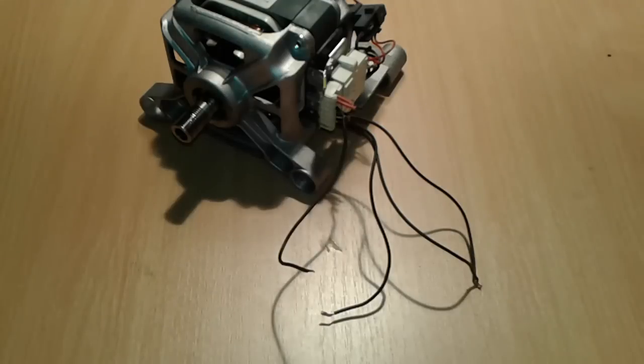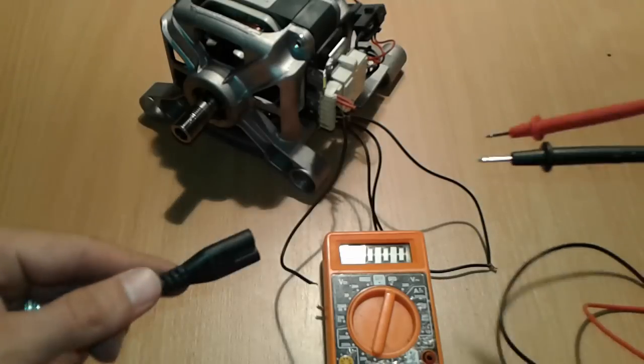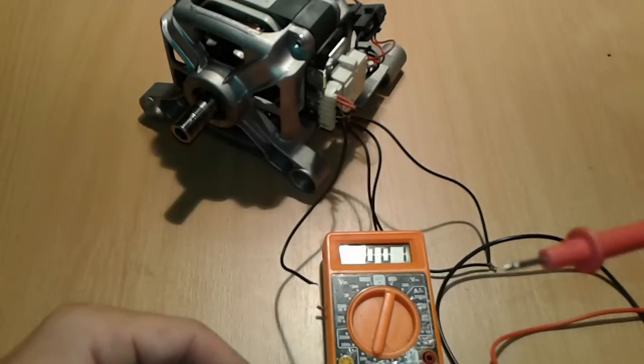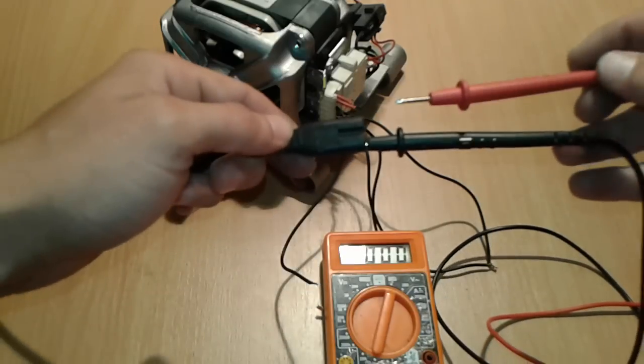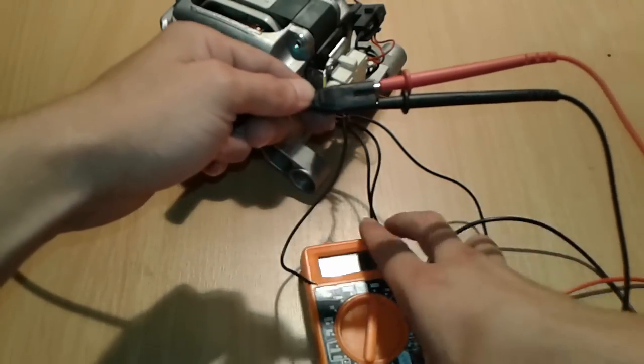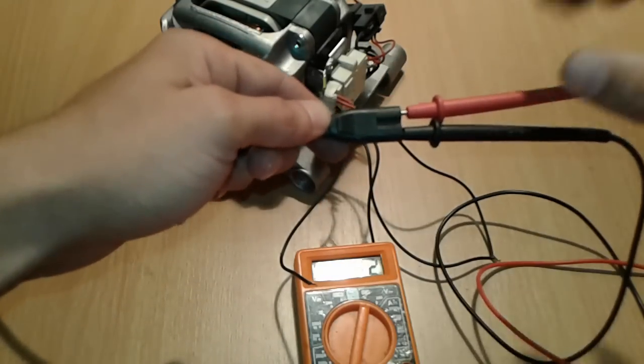All right folks, as a proof we have here a small cable that is connected to the mains, so be very careful, don't try this at home. And you see 240 and the symbol is here for AC.